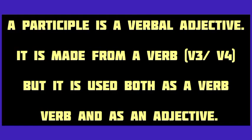But what is the participle? A participle is a verbal adjective. In other words, a participle is both a verb and an adjective. It is made from a verb but used both as a verb and an adjective. A participle may be either the third form of a verb or the fourth form of a verb, and it may function either as a verb or as an adjective in the sentence.